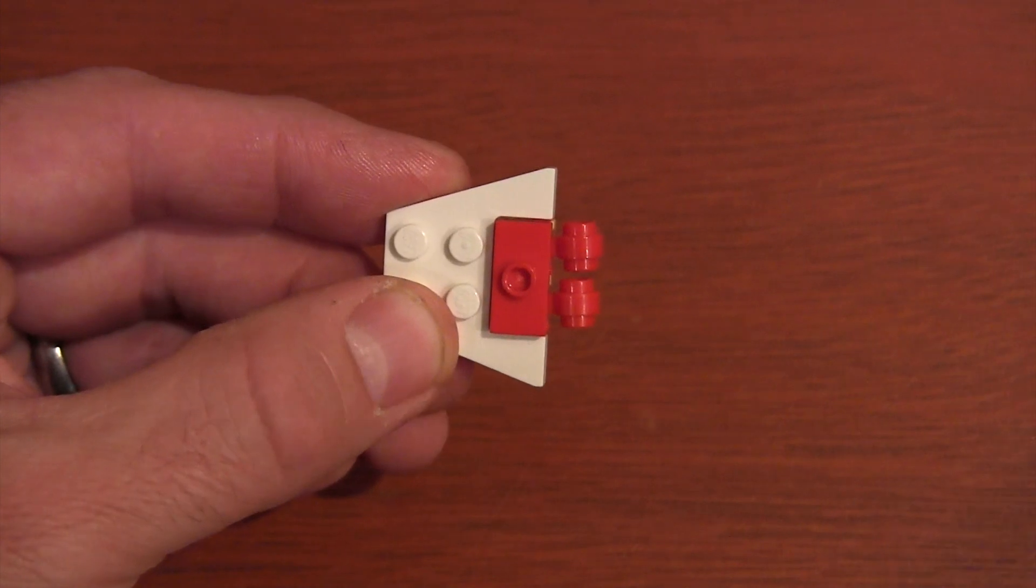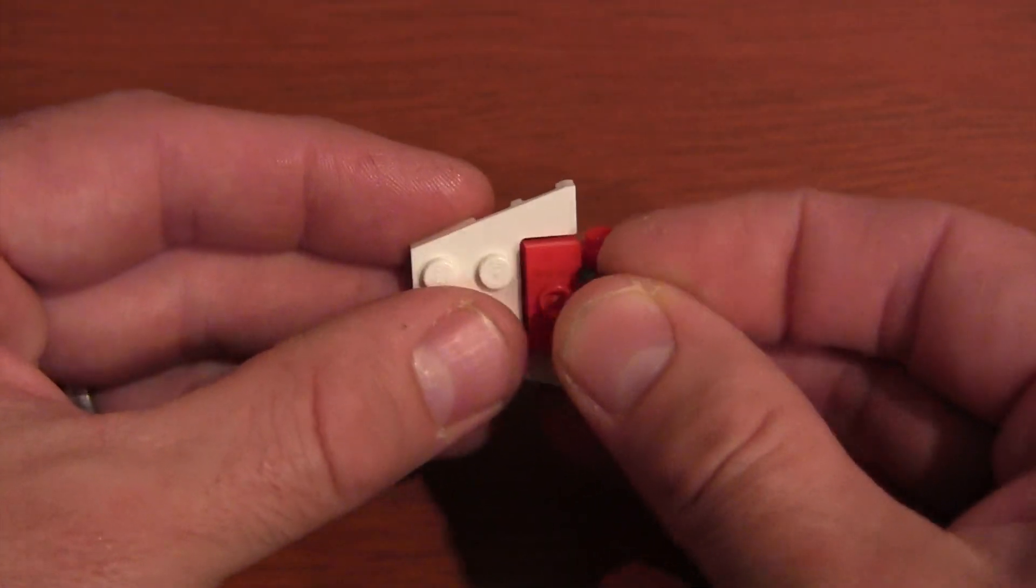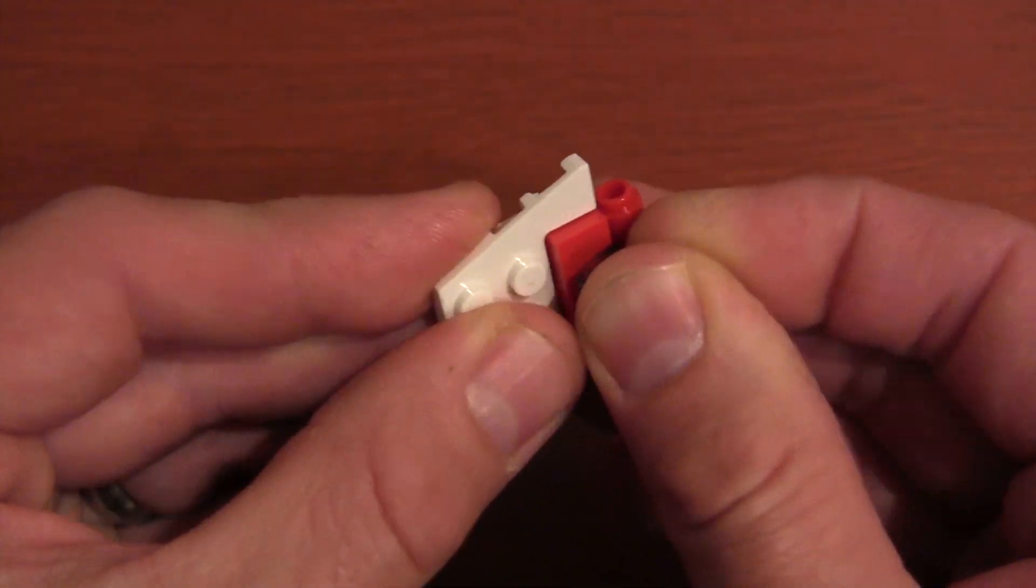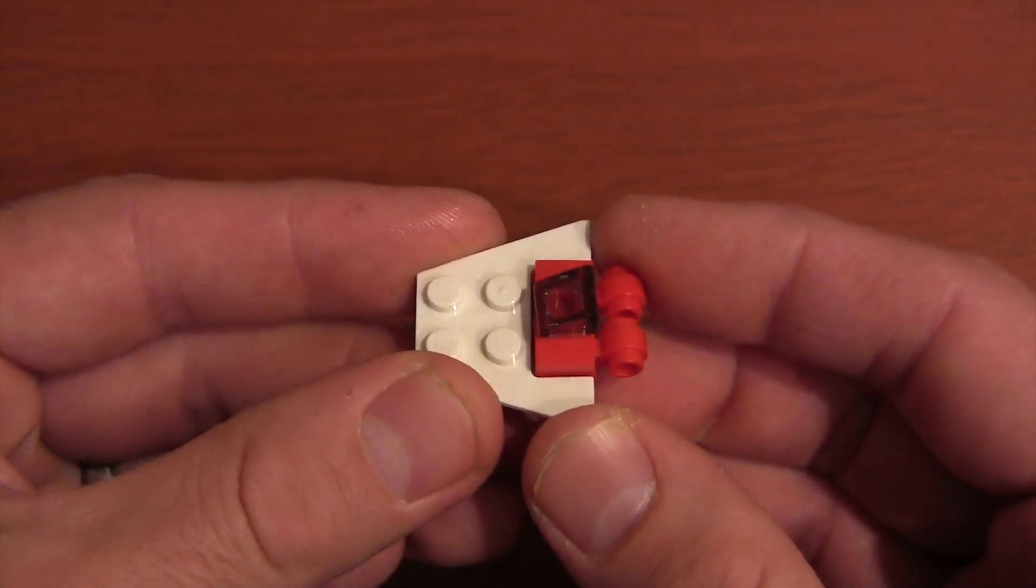And on top of that jumper plate, we're going to get our black translucent slope to create the cockpit of our A-Wing fighter.